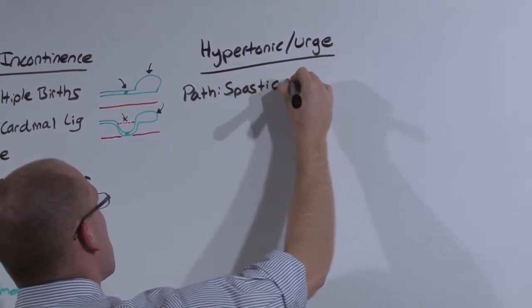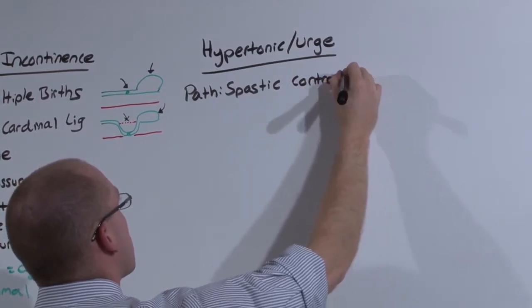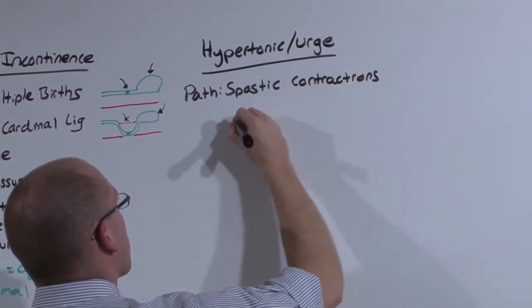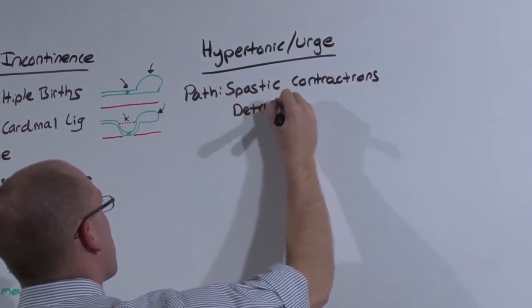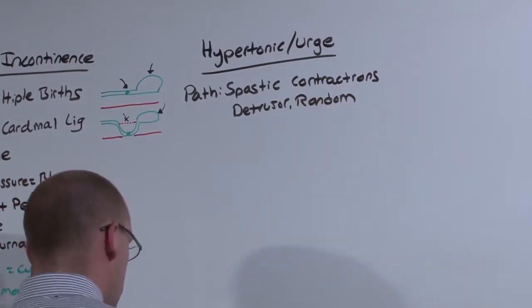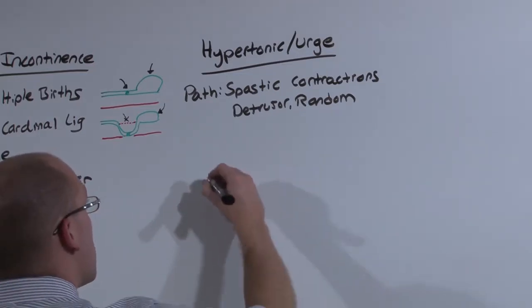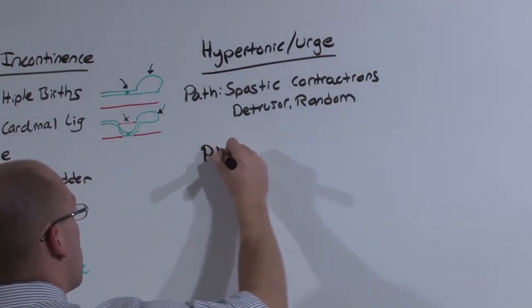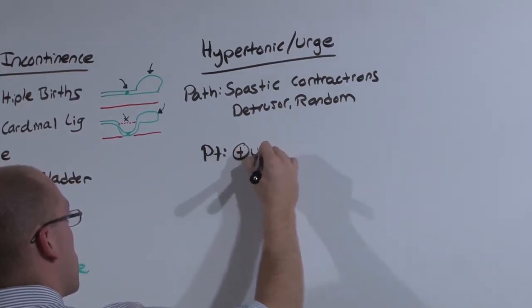There's random spastic contractions of the detrusor muscle. Such that these contractions occur at all volumes. The patient doesn't know when they're going to come. But the patient does know that when a contraction is occurring, there is definitely the urge to go.